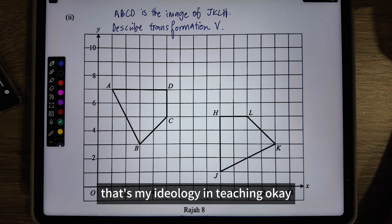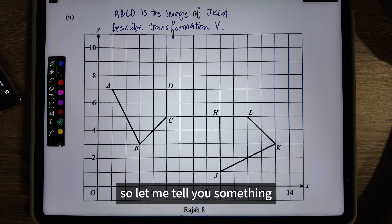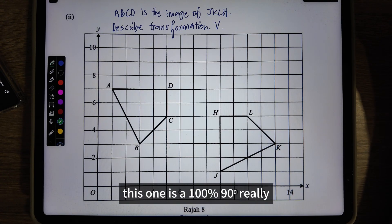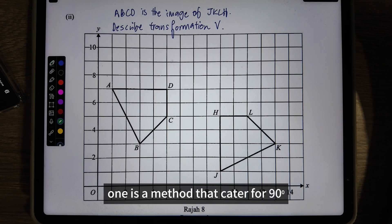Let me tell you something. Let's ignore all the anticlockwise, clockwise, everything. This one is 100% for 90 degrees because this is a method that caters for 90-degree related rotation points.